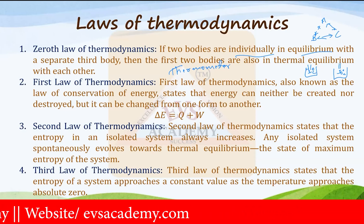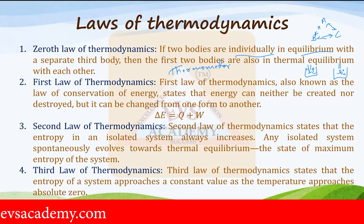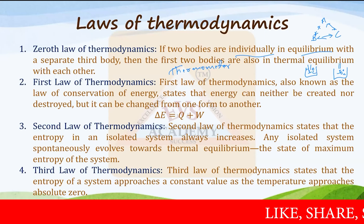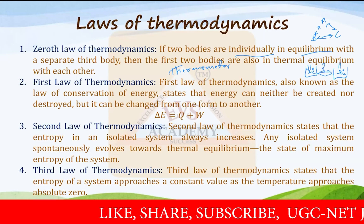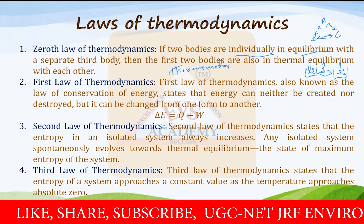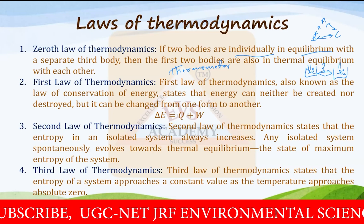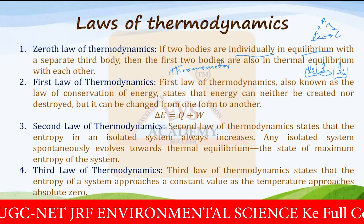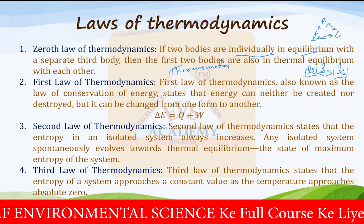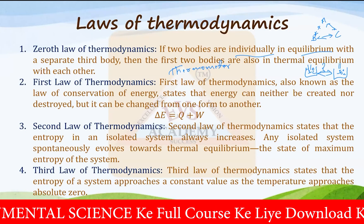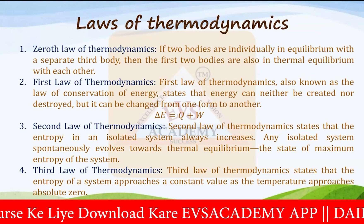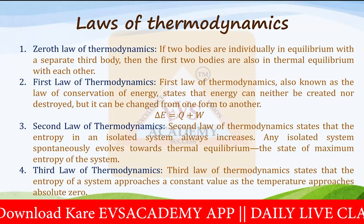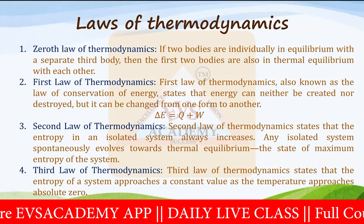The First Law of Thermodynamics, also known as the Law of Conservation of Energy, states that energy can neither be created nor destroyed — it can only change from one form to another. The mathematical formulation is: delta E equals Q plus W, where delta E is the change in energy, Q is the change in internal energy, and W is the work done by the system.